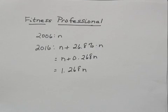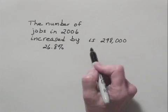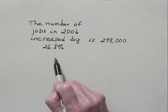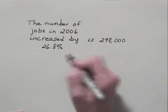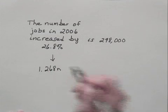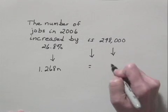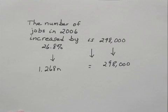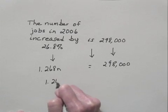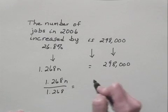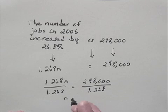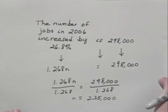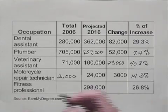Now in order to find N, we'll solve an equation. The number of jobs in 2006 increased by 26.8% is 298,000 — this is the number of jobs in 2016. We just said that this number was 1.268 times N, so 1.268N equals 298,000. Now we can divide both sides of this by 1.268. When we do this, N is approximately equal to 235,000. So this is the number of jobs in 2006.